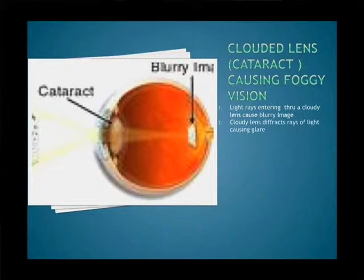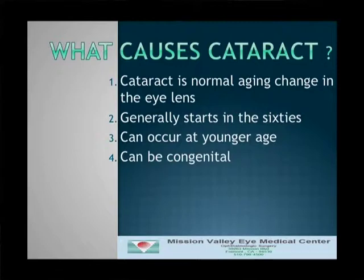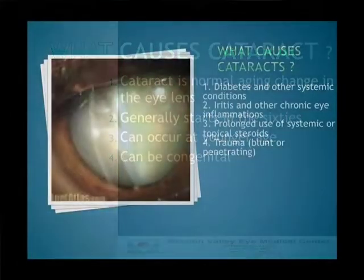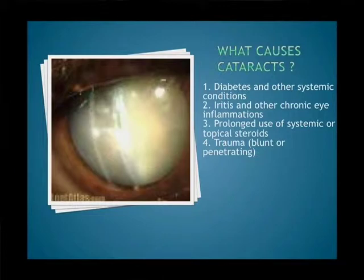As you can see in this blurred picture, that's how a moderate to advanced cataract patient sees. So what causes cataracts? Basically, if you live long enough, we're all going to get cataracts. It's an aging process in the lens of the eye that generally starts in the 60s. Diabetes is one of the most common causes — uncontrolled, prolonged diabetes can cause cataracts.